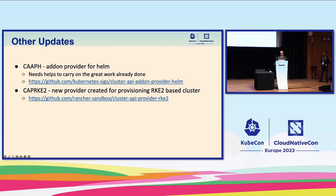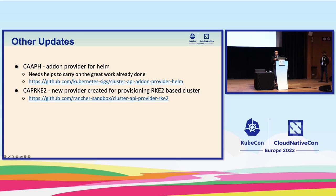Two other updates: the add-on provider for Helm has been making great progress, enabling you to install Helm charts into newly provisioned clusters. The project is looking for more contributors — stop by the repo or the CAPI Slack channel. For those using RKE2, perhaps for FIPS compliance reasons, there is a new bootstrap and control plane provider for RKE2, currently at alpha level and needing community help to drive it forward.